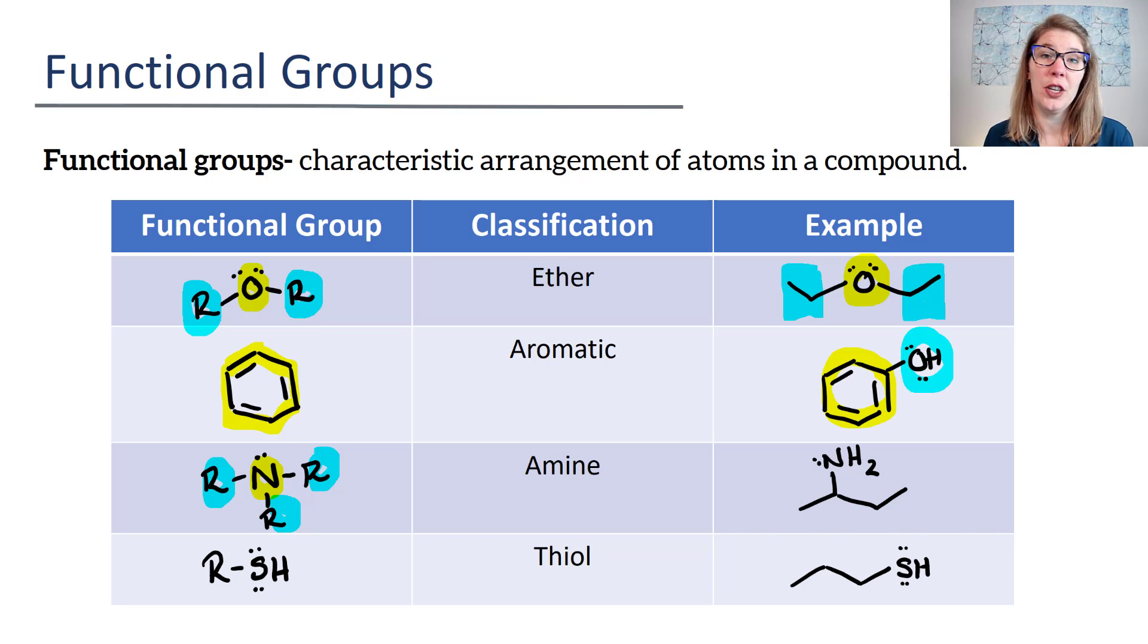A thiol is where you have an alkyl group and then an SH. It looks a lot like an alcohol, except instead of an O, there's an S there.